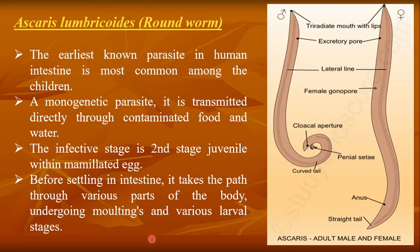Ascaris lumbricoides, the roundworm, is the earliest known parasite in the human intestine and is most common among children. It is a monogenetic parasite transmitted directly through contaminated food and water.